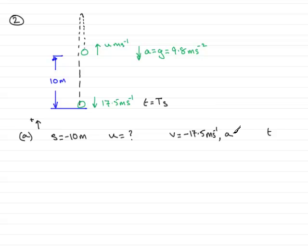For a, the acceleration due to gravity is downwards, so that would be minus 9.8, meters per second per second. t, anyway, is big T seconds when it arrives down here.